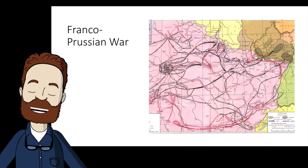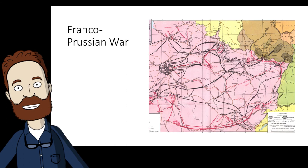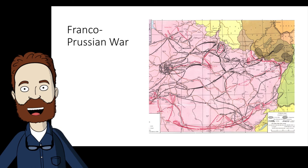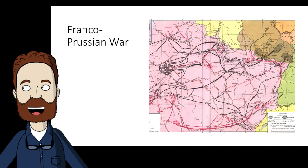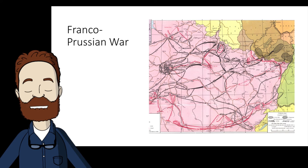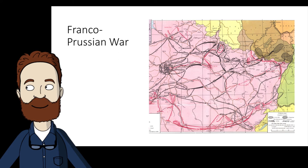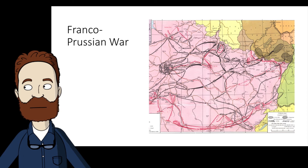Bismarck wrote in his reminiscences: 'Given the attitude of France, our national sense of honor compelled us to go to war.' Bismarck knew war with France was the best possible thing to kindle a German nationalism in Bavaria, Württemberg, and the remaining states on the Main River in southern Germany. When he was informed that France demanded the perpetual exclusion of the Hohenzollern family from the Spanish throne, Bismarck decided the time was right for action.